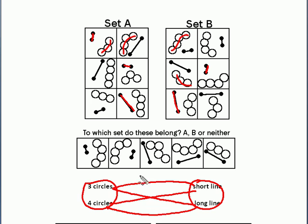Now to make a rule for set A, we could choose two of these. So I could say that three circles and short line is set A, and that's what we're seeing there, three circles and short line, but we can also have that four circles and long line, like we've got there, that's also a set A.